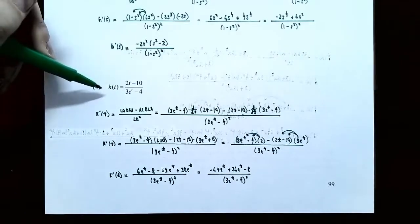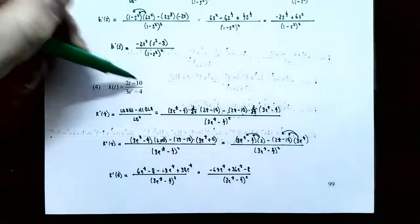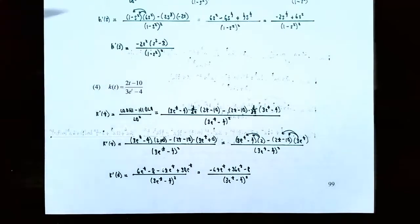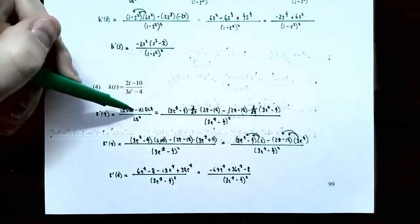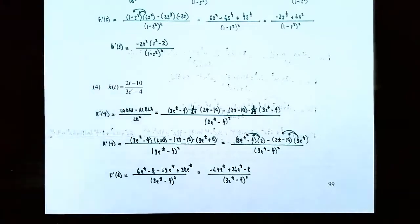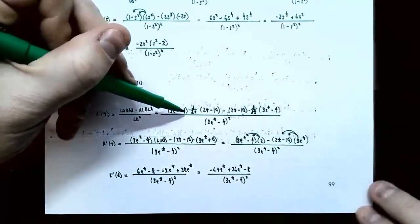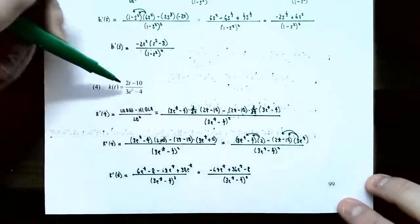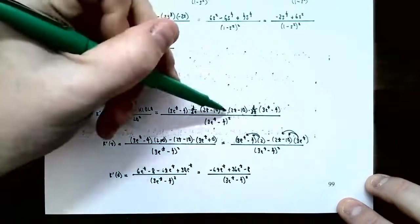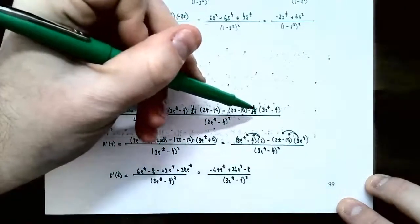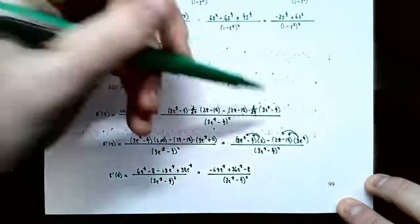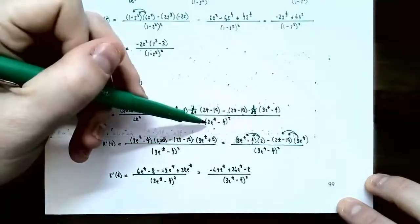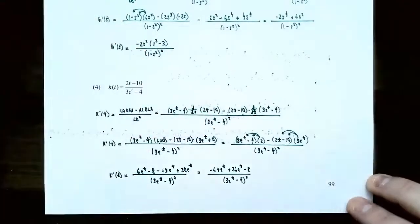Number 4: the function k of t is 2t minus 10 in the numerator, and 3 times e to the t minus 4 in the denominator. Since this is a fraction of two different functions, use the quotient rule. So k prime of t is low d high minus high d low over low squared. Low is 3e to the t minus 4, times d/dt of 2t minus 10, minus the quantity 2t minus 10 times the derivative of 3e to the t minus 4, all divided by 3e to the t minus 4, quantity squared.